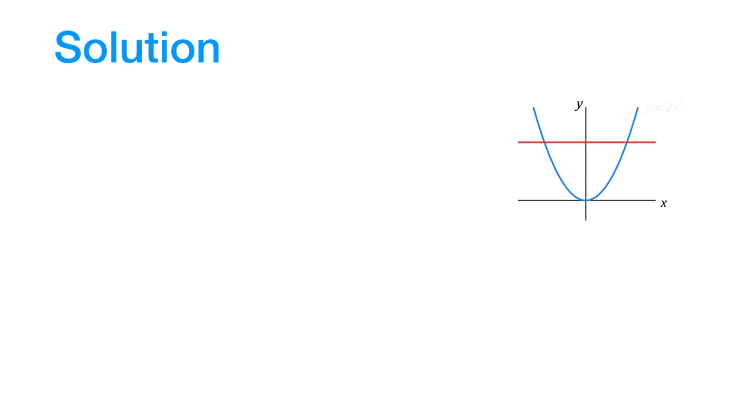Now over here, the blue line represents the parabola y equals 2x squared and the red line represents the horizontal line y equals 6.